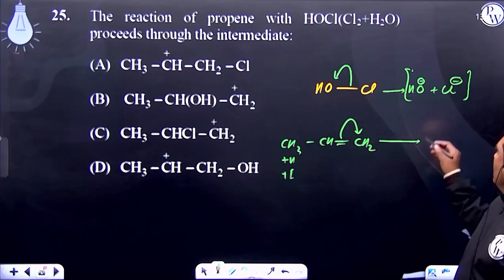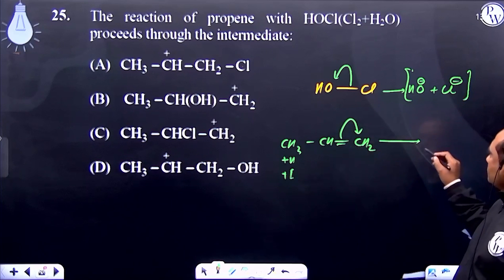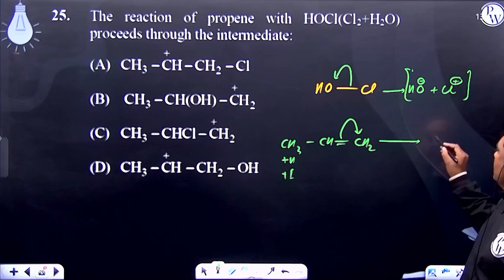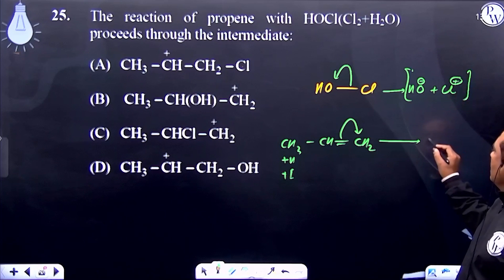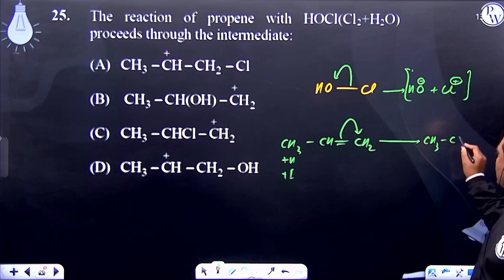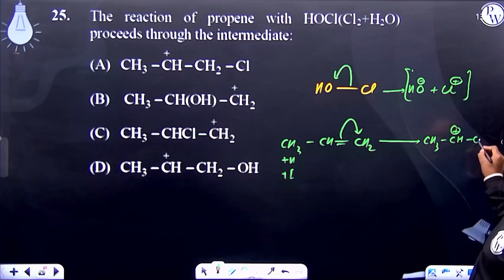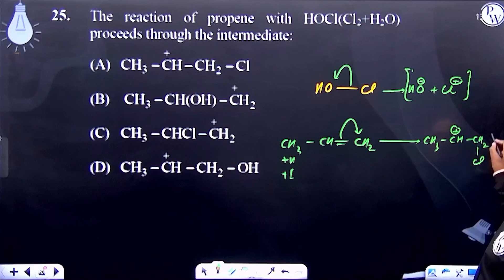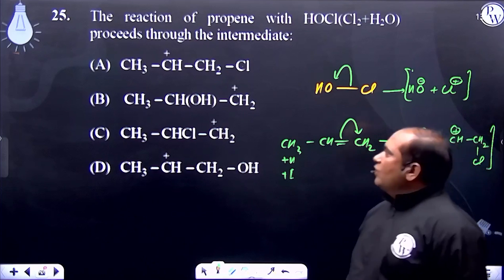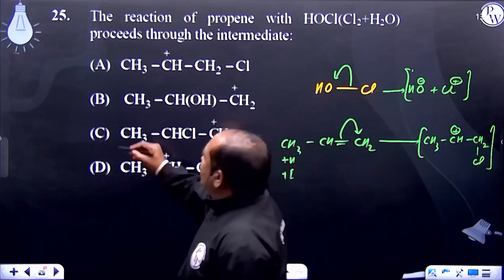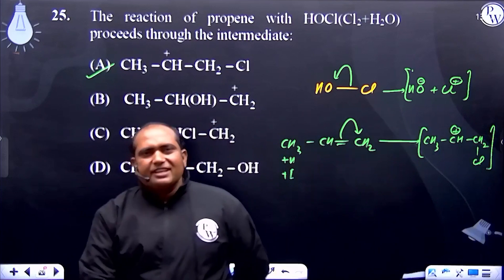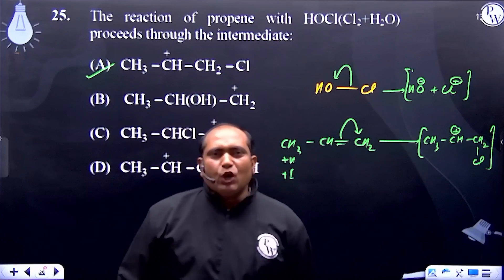The CH₃ carbocation forms as an intermediate, giving CH₃⁺ and CH₂Cl. This is our intermediate. So the answer is option A.